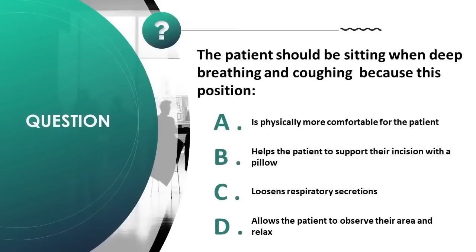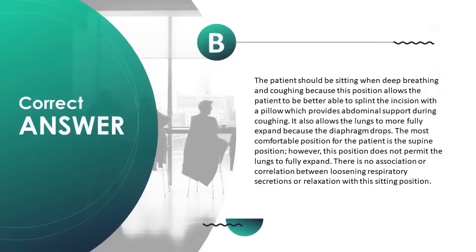The patient should be sitting when deep breathing and coughing because this position: A) is physically more comfortable, B) helps the patient support their incision with a pillow, C) loosens respiratory secretions, D) allows the patient to observe their area and relax. Correct answer is B. The sitting position allows the patient to better splint the incision with a pillow, providing abdominal support during coughing.